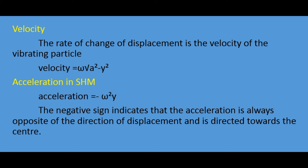Velocity is the rate of change of displacement. From y equals a sin omega t, we calculate velocity equals omega times the square root of a squared minus y squared. For acceleration in SHM, acceleration is the rate of change of velocity, so acceleration equals minus omega squared y. The negative sign indicates the acceleration is always opposite to the displacement and is directed towards the center.